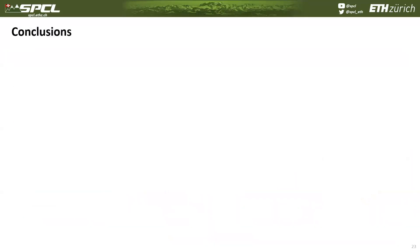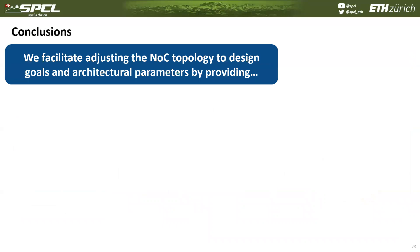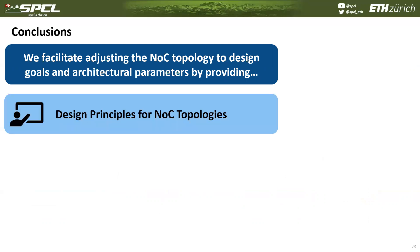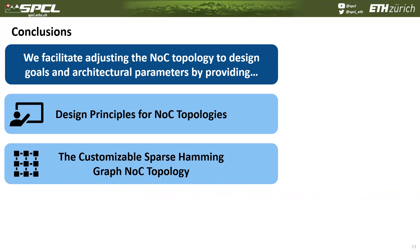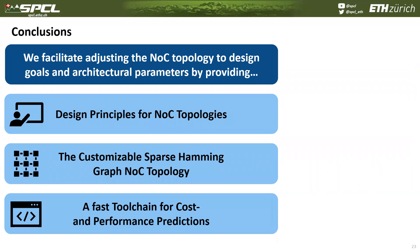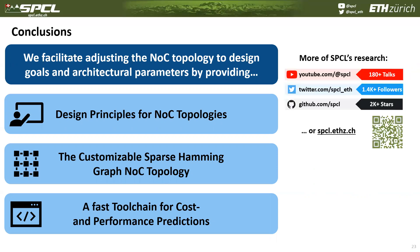Let's come to a conclusion. With our project, we facilitate adjusting the network-on-chip topology to design goals and to architectural parameters: by providing design principles for network-on-chip topologies; by providing the customizable Sparse HemmingGraph topology with an adjustable cost-performance trade-off; and by providing a fast toolchain for cost and performance predictions. If you are interested in more talks from SPCL, feel free to continue browsing our YouTube channel. Consider following our Twitter to stay up to date with the lab, and visit our GitHub page if you are interested in our code, for example the fast toolchain for cost and performance predictions.